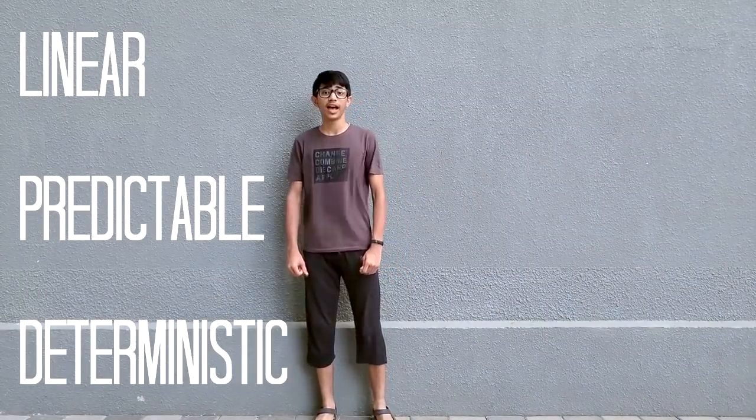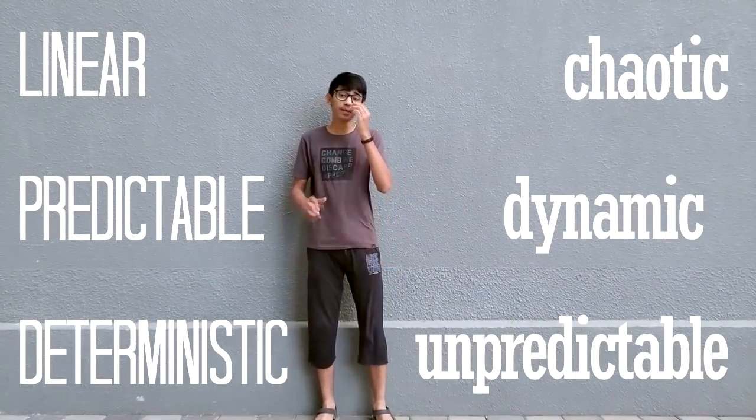Firstly, we need to understand two kinds of systems: linear, predictable, and deterministic systems, and chaotic, dynamic, and unpredictable systems.